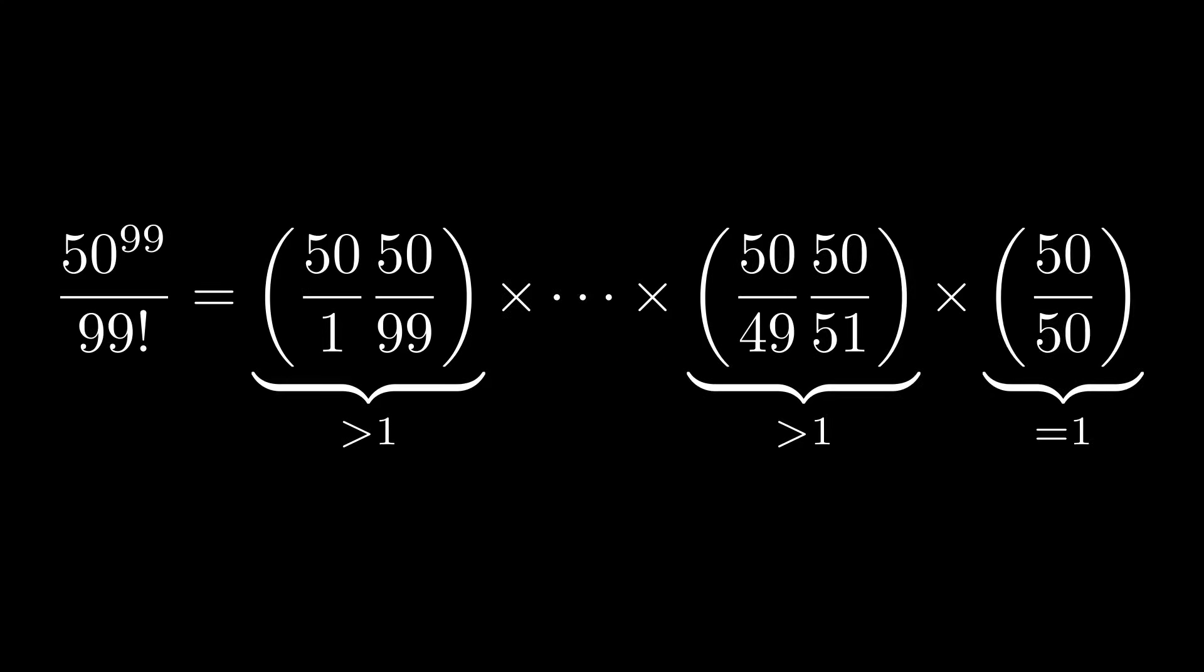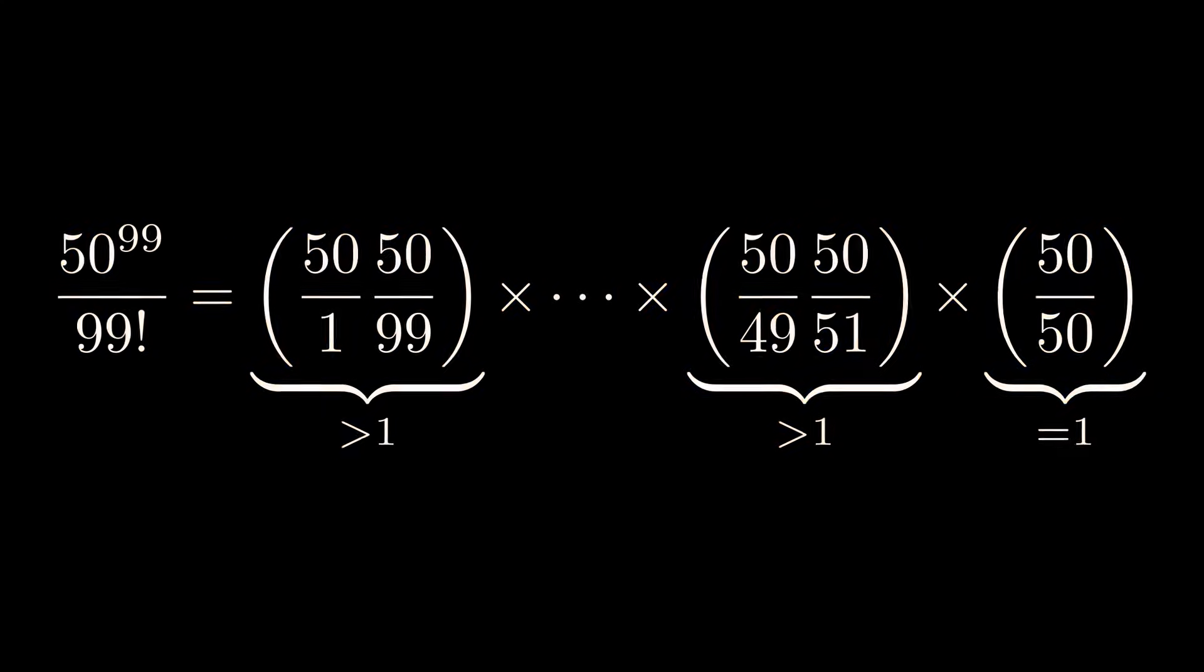All right, we have all the pieces. Let's put them together. Our original ratio is a product of 49 pairs, and we've just proven that every single one of those pairs is greater than 1, times that middle term which is exactly 1.